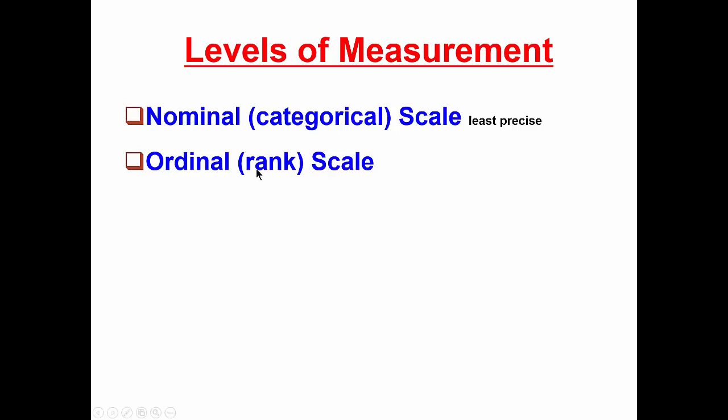Interestingly, if we're looking at the difference between the first rank school and the second rank school and the third rank school, it might be that the interval between those ranks is very uneven. First and second place might be very close to each other. There might be a huge gap, and then we have the third place school followed by the fourth place school, and then another huge gap. So, the intervals in an ordinal scale are often very unequal.